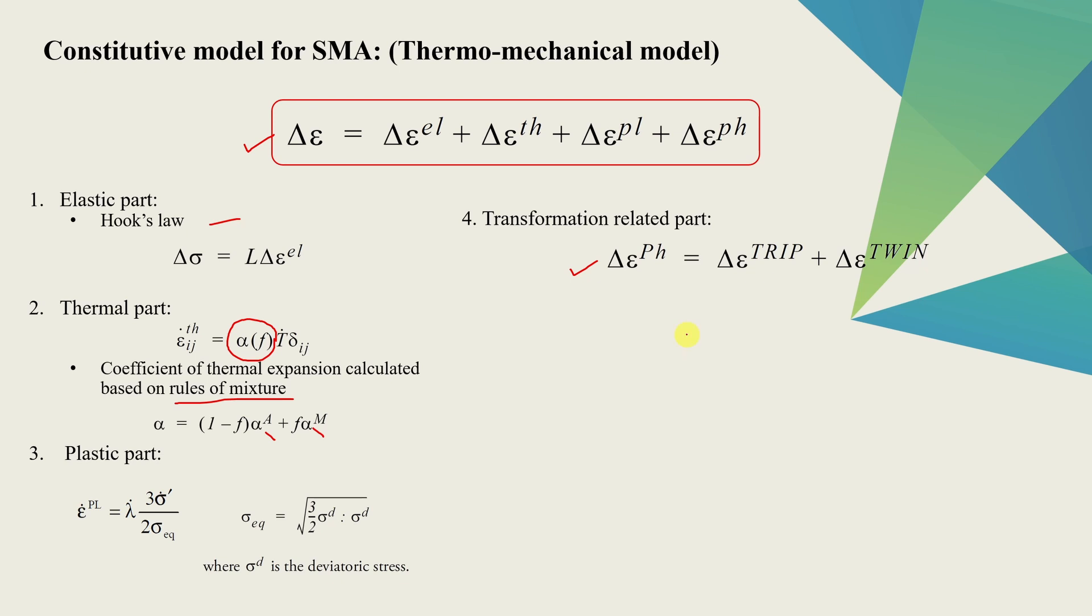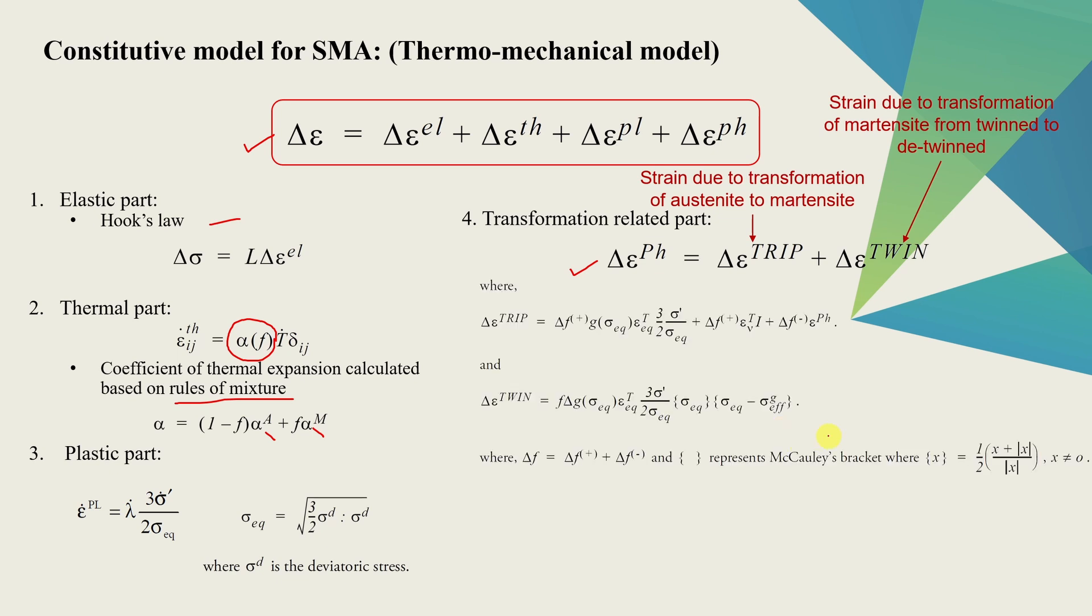This strain is again divided into two parts. First part is called TRIP, which is strain due to transformation of austenite to martensite or martensite to austenite. And the second part is TWIN, which is because of transformation of martensite from twinned to detwinned orientation. And constitutive model is nothing but relation between strain and stress. So somehow we have to relate these two strains to stress to get a complete model. And that is given by these equations.